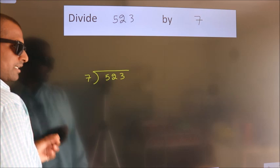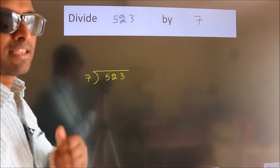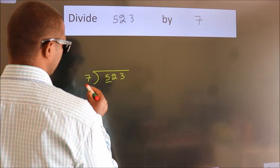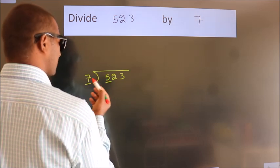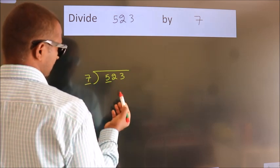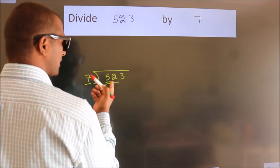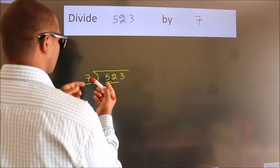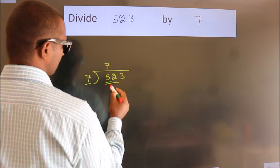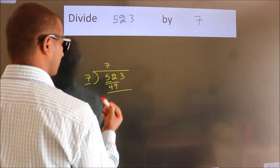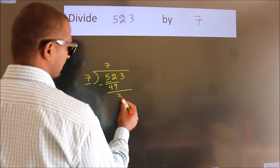This is your step 1. Next, here we have 5, here 7. 5 is smaller than 7, so we should take 2 numbers: 52. A number close to 52 in the 7 table is 7 times 7 equals 49. Now, we should subtract. We get 3.